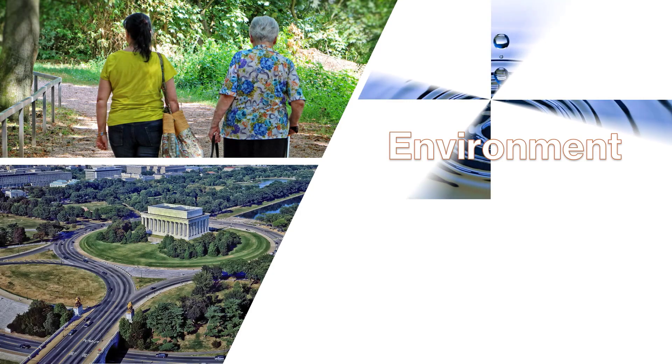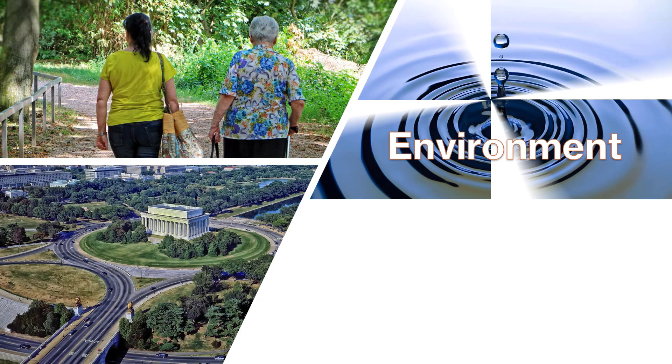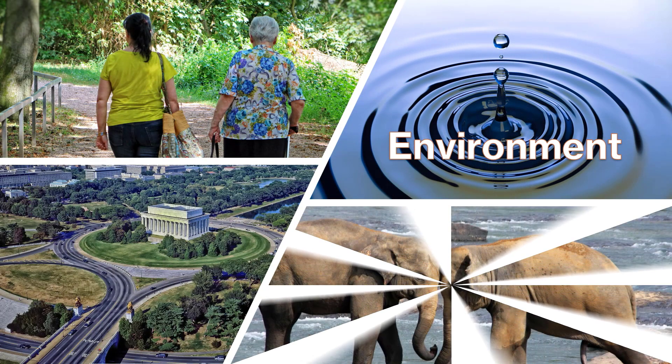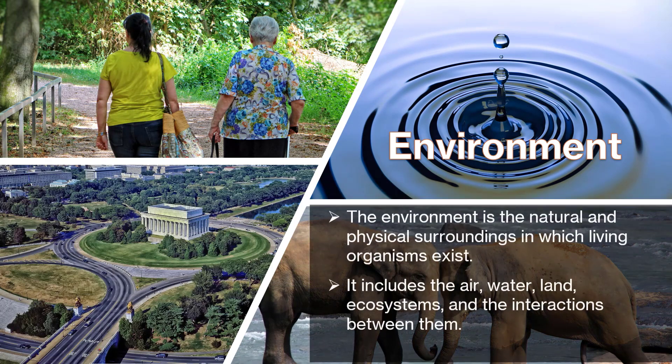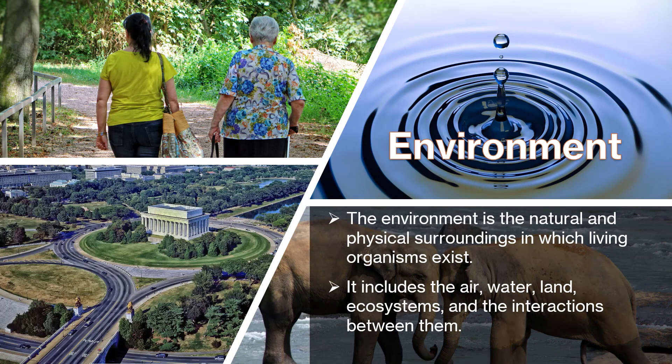Now let us define the environment. The environment can be defined as the natural and physical surroundings in which organisms, including humans, exist and interact. The environment is our surroundings, and it includes air, water, land, and all living organisms including microorganisms, and man-made things like roads, buildings, bridges, etc.